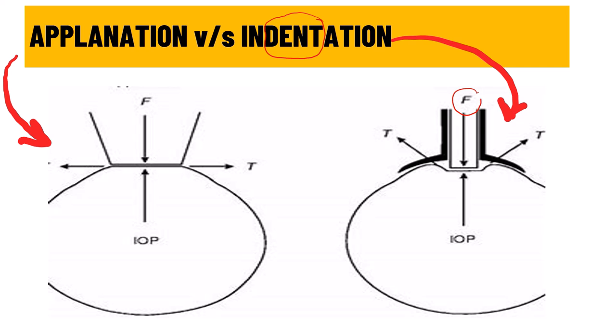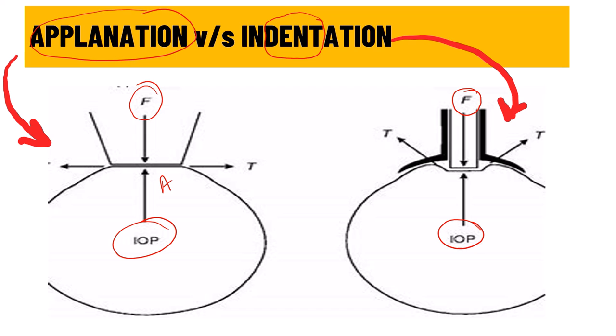In applanation, no localized depression is created. Instead it causes a flattening effect on a particular area of the cornea using a certain amount of force. Once we know this force to applanate or flatten a particular area of the cornea, we can calculate the intraocular pressure. In applanation we are flattening the cornea, whereas in indentation we are creating a depression by depressing the cornea with a certain amount of force.